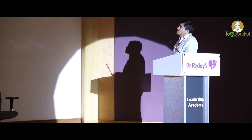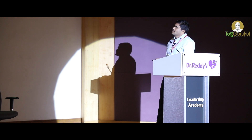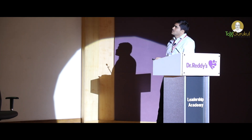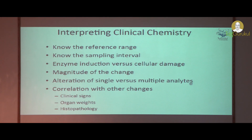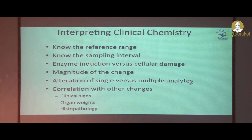Coming to the interpretation of clinical chemistry for hepatotoxicity, mainly you have to look at the reference range and compare to the concurrent control. Then go to the historical control and be aware of the sampling interval, because some enzymes like SDH have very short half-lives. Some enzymes are increased due to enzyme induction, like ALP which is induced by phenobarbital. You should consider whether the increase is due to induction or cellular damage and look at the magnitude of change compared to concurrent controls. The usual standard is that more than a twofold increase in hepatocellular injury markers is considered adverse. Correlation should always be done with clinical signs, organ weights, and histopathology.